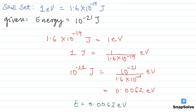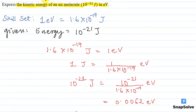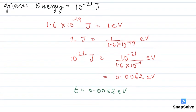Let's summarize this question. Here we were given: express the kinetic energy of the molecule which is 10 raised to the power minus 21 joules in electron volt. We used the relation between electron volt and joules and applied the unitary method. The answer is 10 raised to the power minus 21 joules in electron volt, which is equal to 0.0062 electron volt.